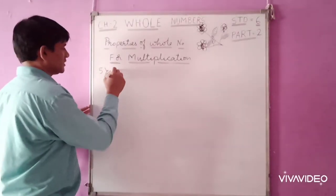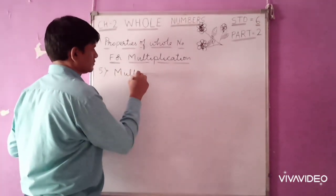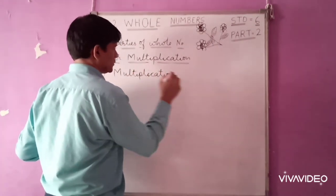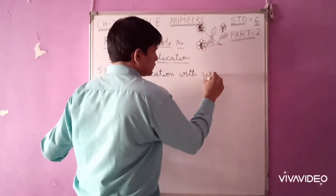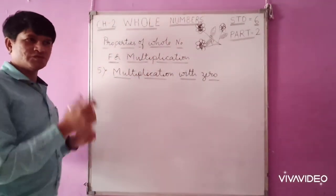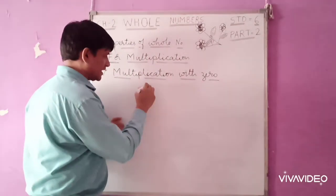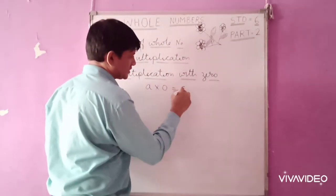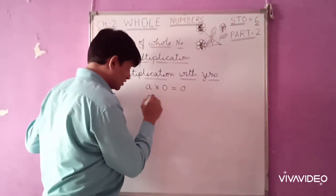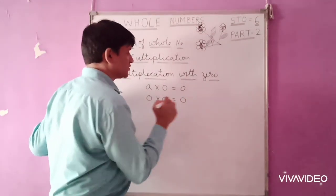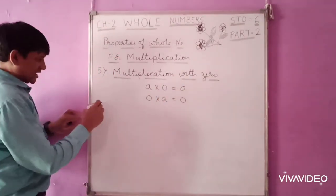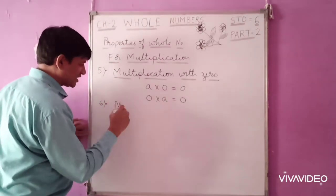The next topic is multiplication by zero. Any number multiplied by 0 is equal to 0, and 0 multiplied by any number is also 0. So a × 0 = 0. When multiplied with zero, the answer is always zero.